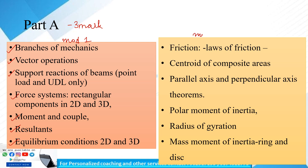Now we have Module 2. We have laws of friction with key terms: angle of friction, coefficient of friction, limiting friction, angle of repose. This includes centroids of composite areas — T-shape and L-shape. We also cover parallel axis and perpendicular axis theorems, polar moment of inertia, radius of gyration — both defining and finding the radius of gyration.